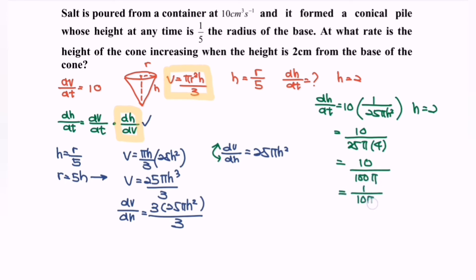So finally, 1 over 10π cm per second for the dh/dt. Or you may express your answer in decimal form, so dh/dt is equals to 0.0318 cm per second.